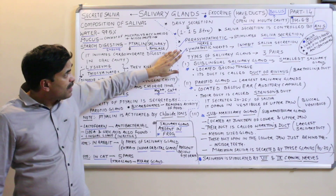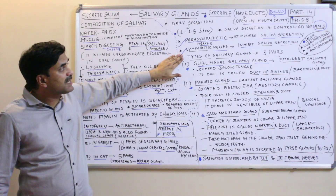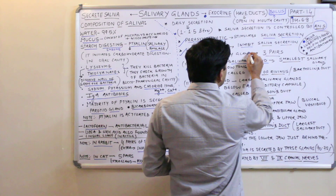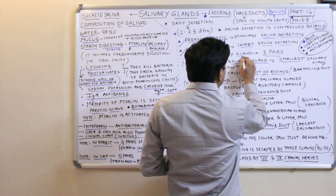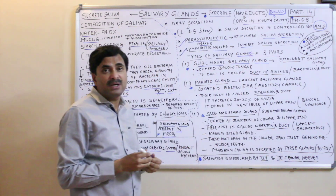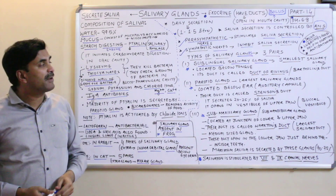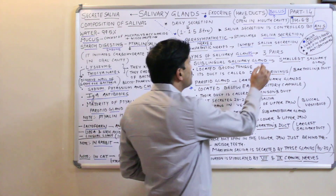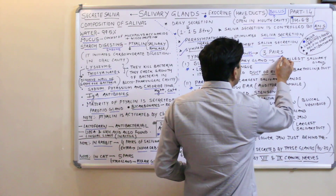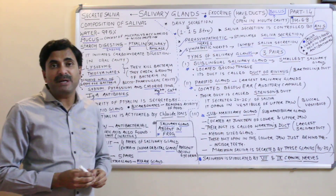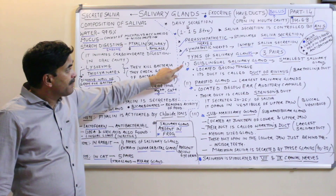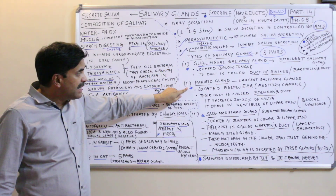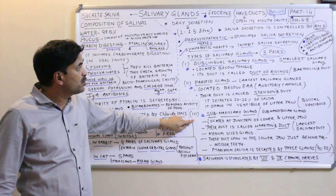How many types of salivary glands are found in the mouth cavity of human beings? Always remember that human beings have 3 pairs of salivary glands: the sublingual salivary gland, the parotid gland, and the submaxillary gland.